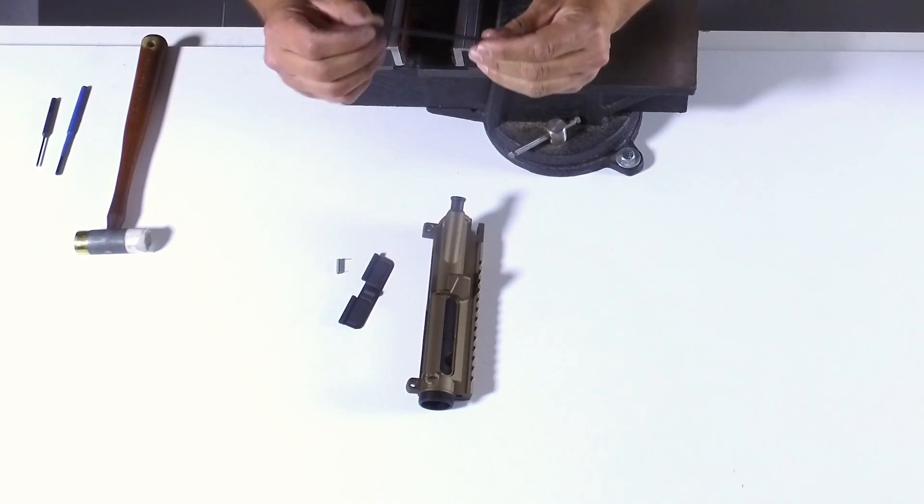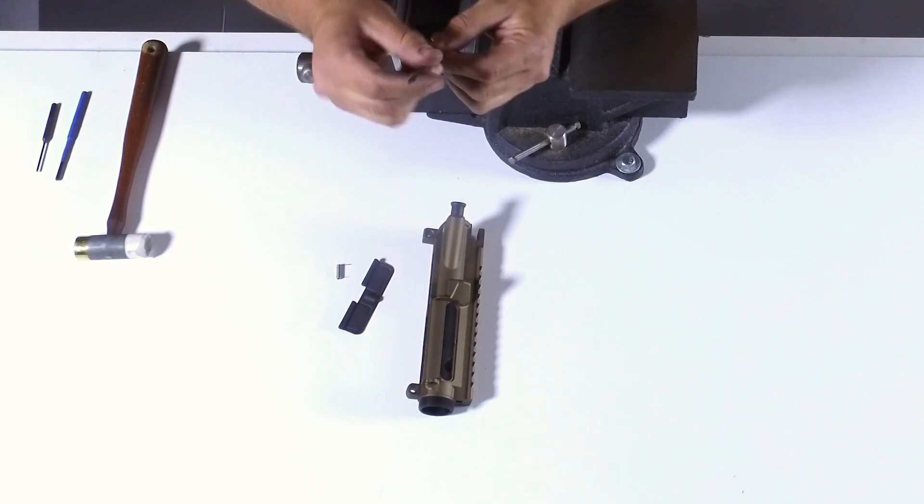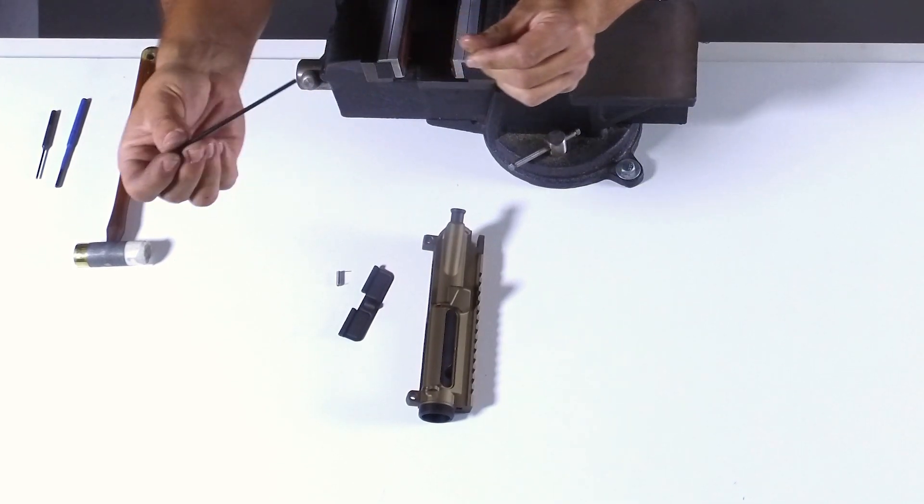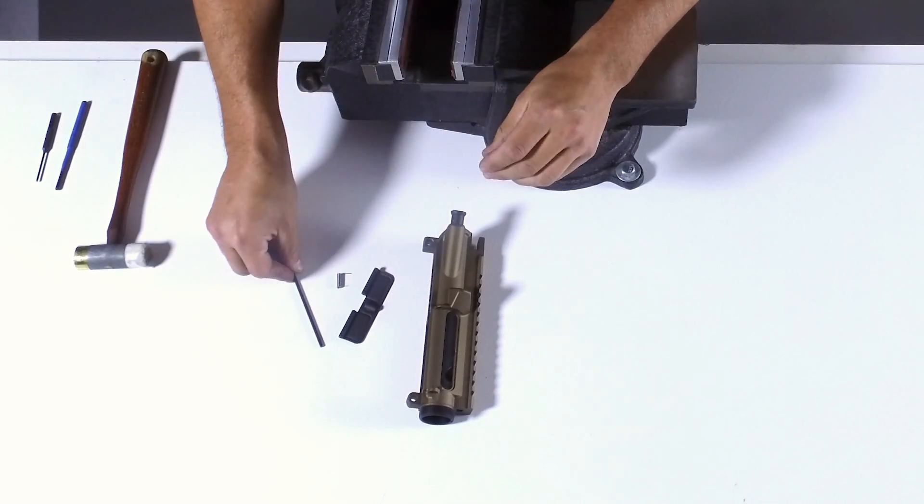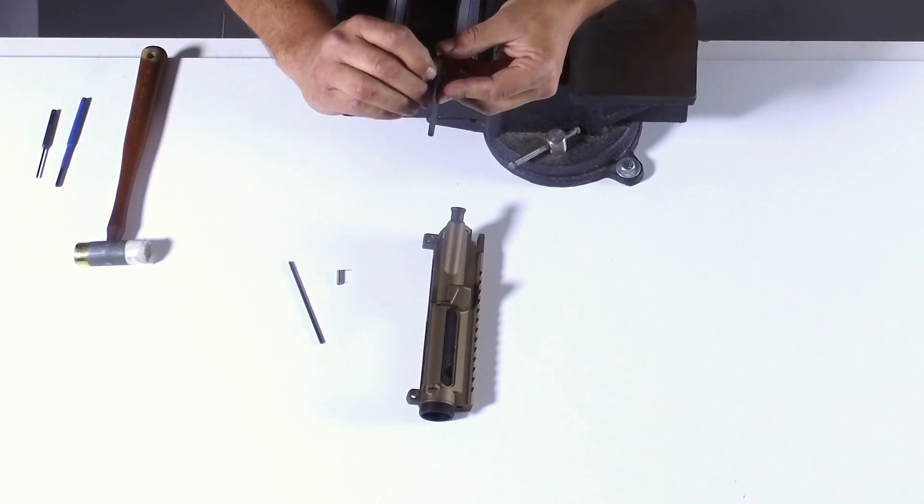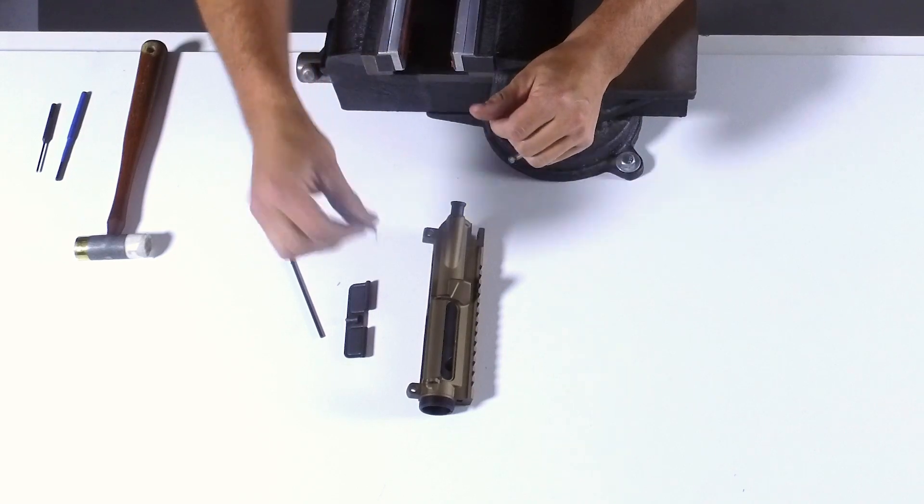This is going to be the back side of the pin that slides in. We have our dust cover, it does have a spring loaded little detent in here, and then we have our spring for the dust cover.